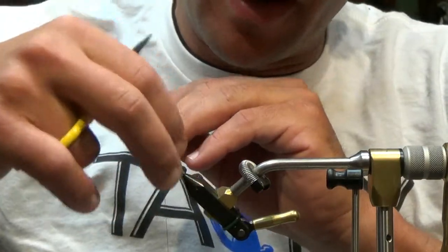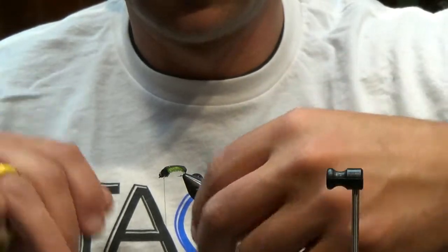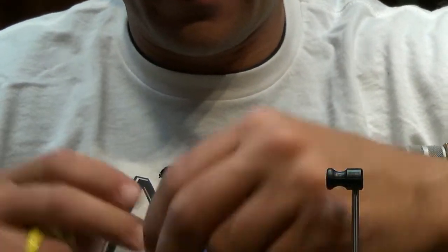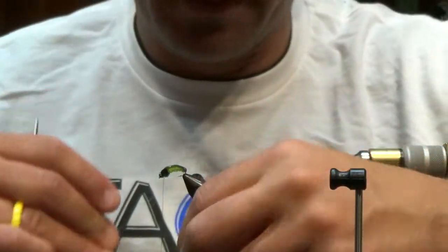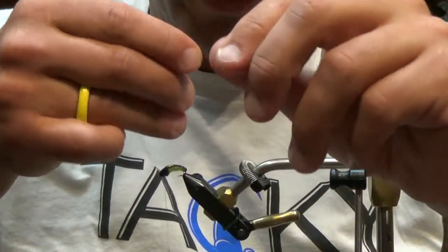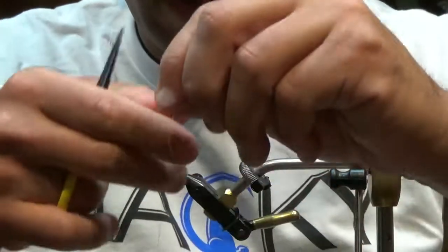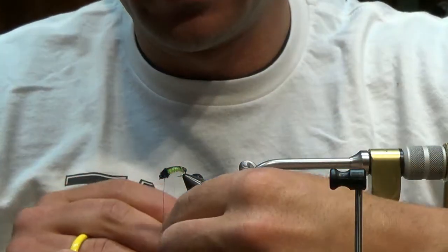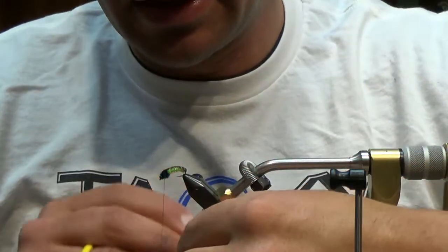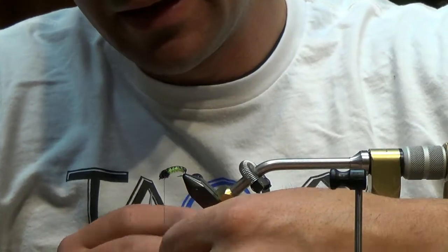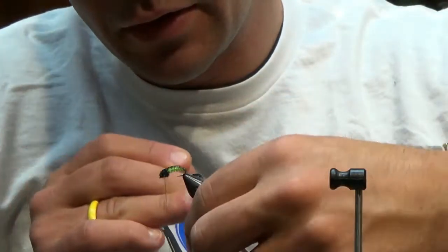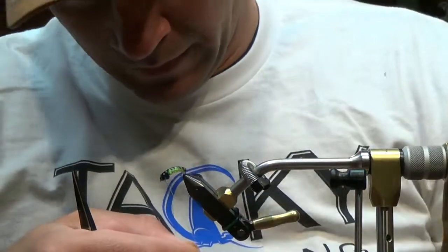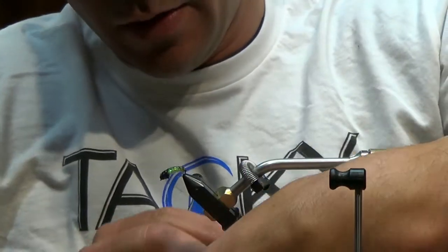Then I want to take my 5x in the opposite direction that I wrapped my other material. So we're just going to bring this right here and we're going to counter wrap it. You can get pretty aggressive with this, you can pull down pretty tight. You're not really going to cut through your thin skin. You'll see it makes a nice segmented body up to the front, just nice even spacing. Then finish this right in front of your bead. My thread got a little bit long on me there but we're all right, we're out of the woods.